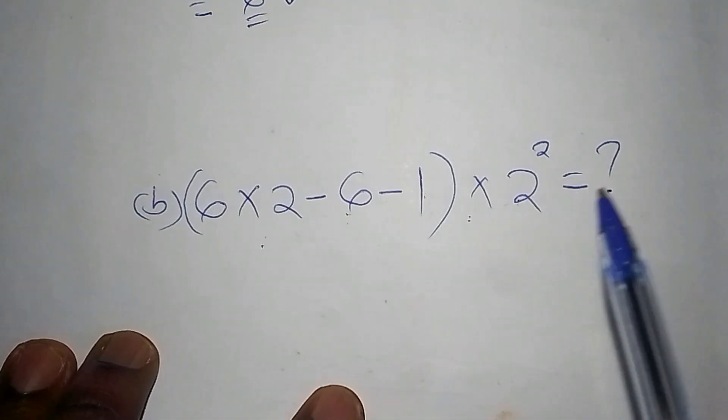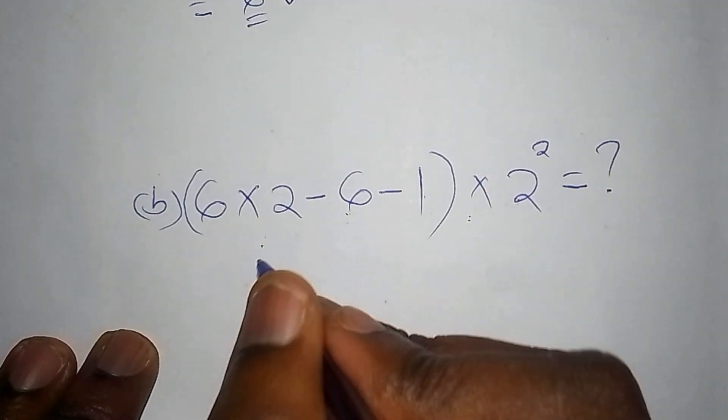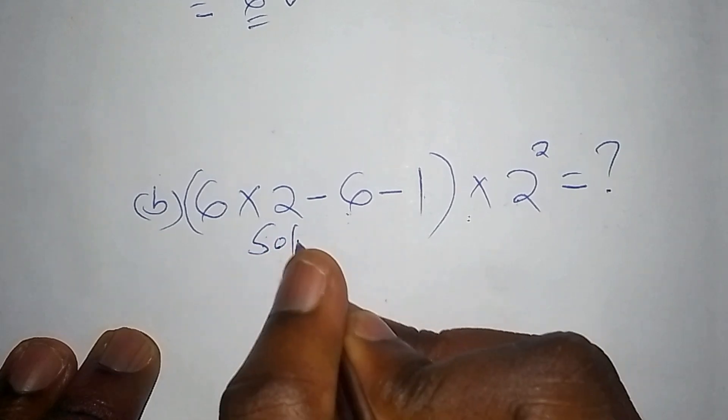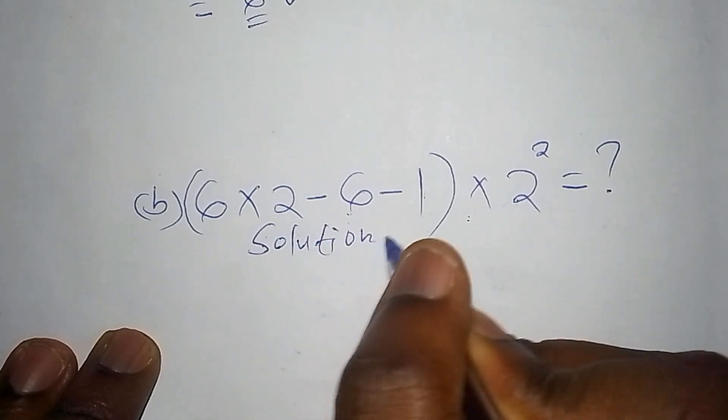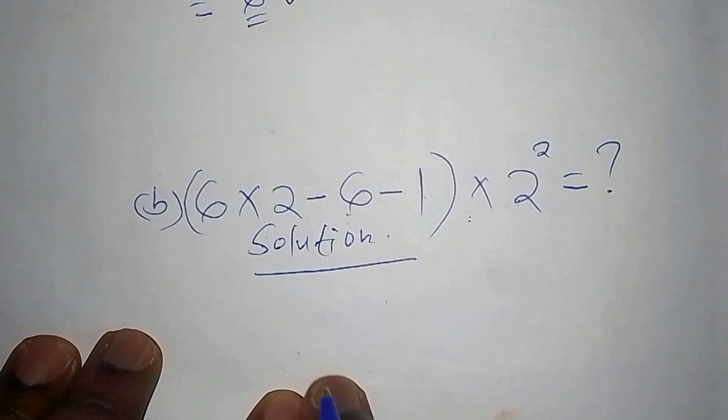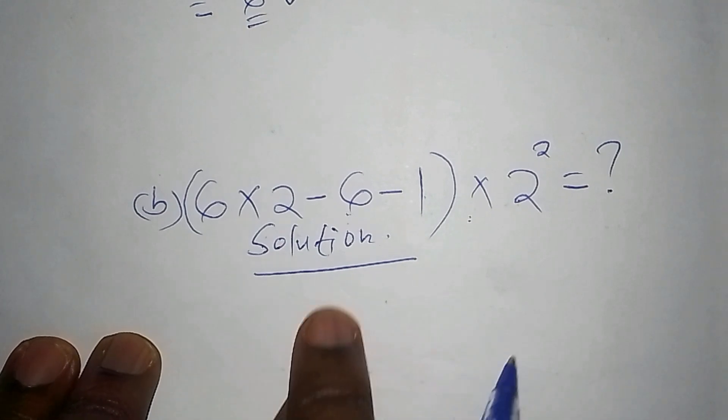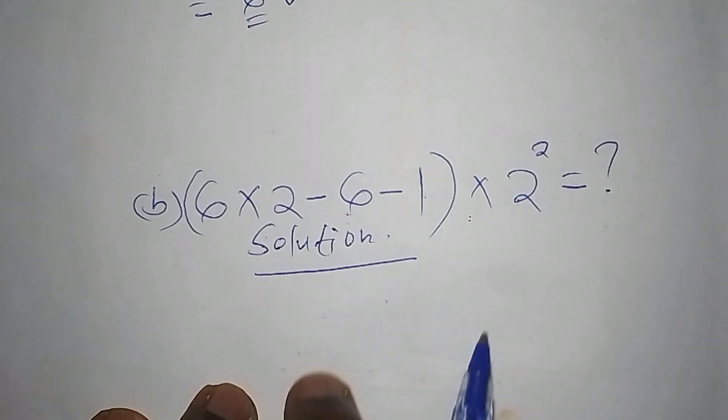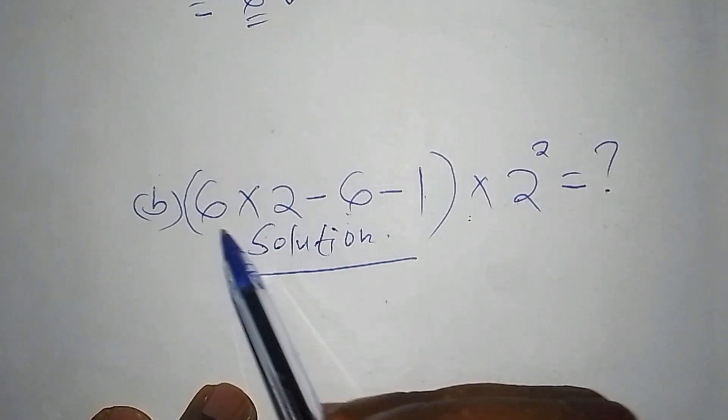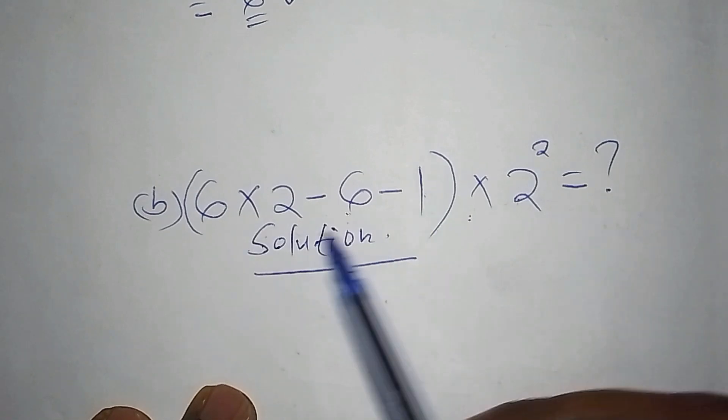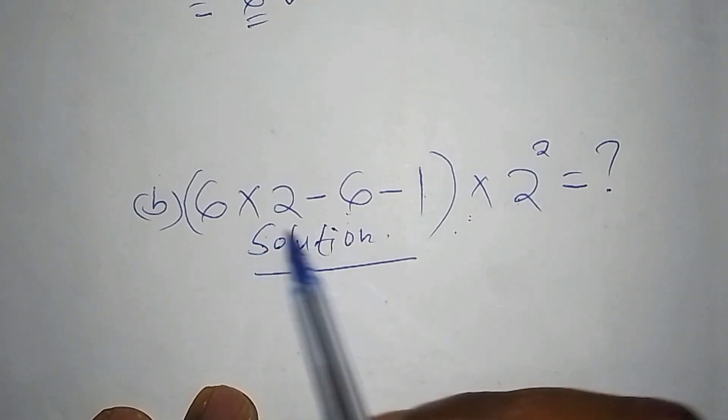The BODMAS shall guide you. So let's begin with the solution. I know by now, by checking our previous examples, you know how to work out this one. So as usual, we are going to work out the number inside the bracket, all the sums that are inside the bracket.